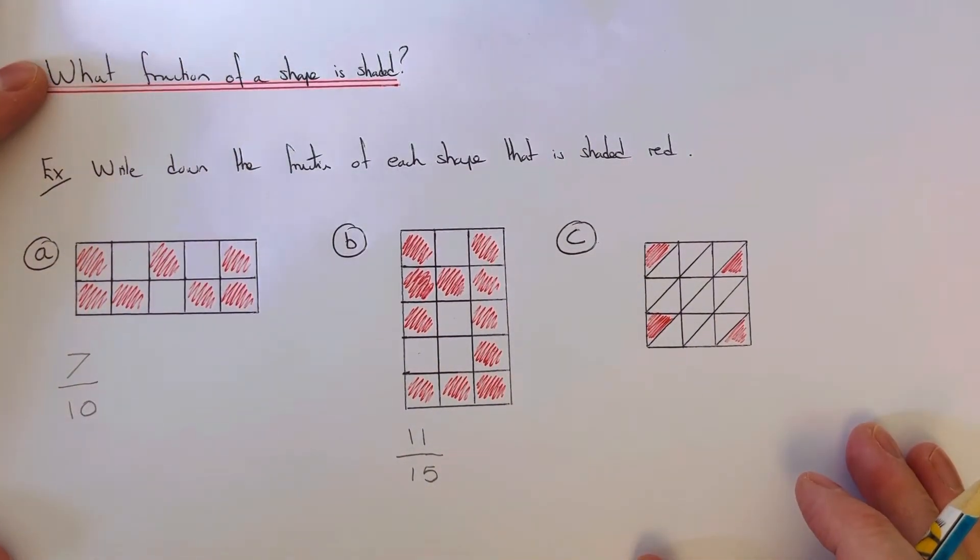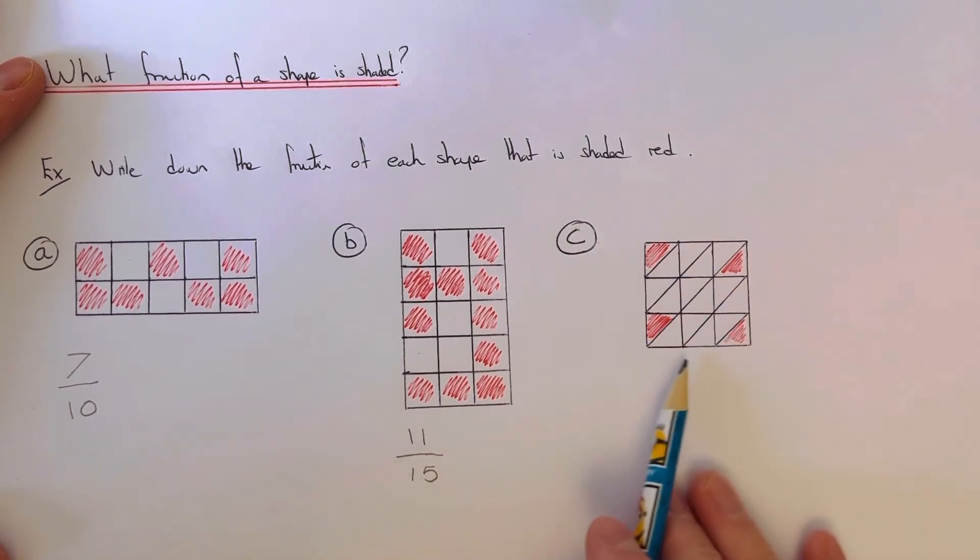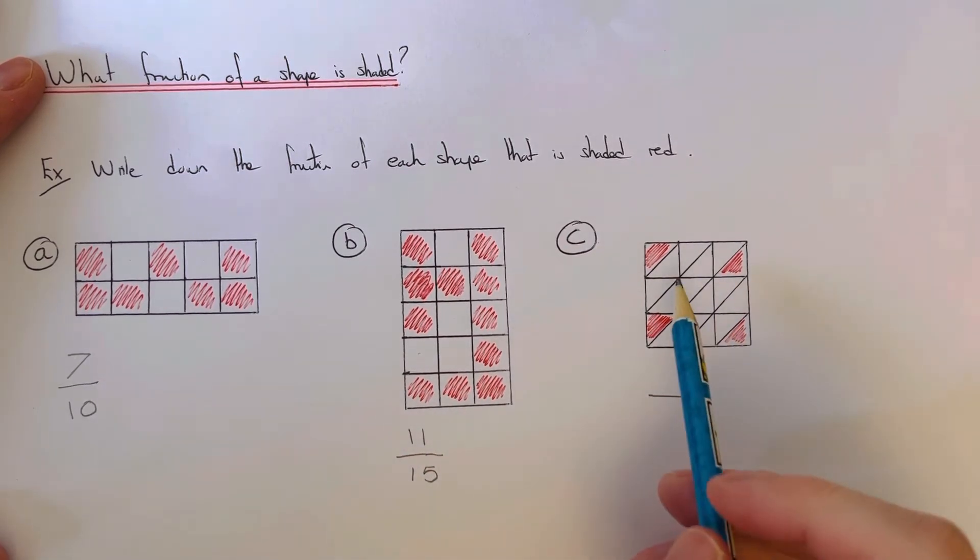So let's have a look at our final example. This time our shape is split into triangles which are all the same size, so we just need to do exactly the same thing. If we count how many triangles are shaded red, we've got one, two, three, four.